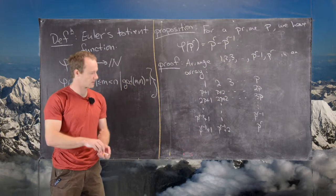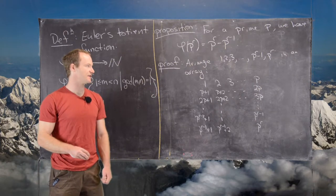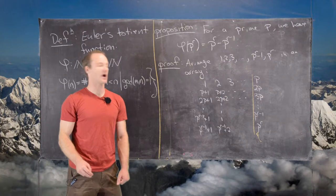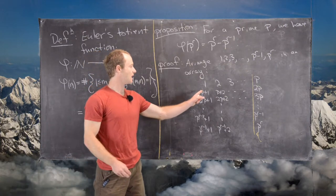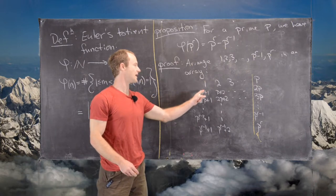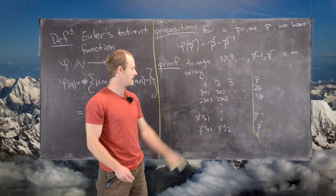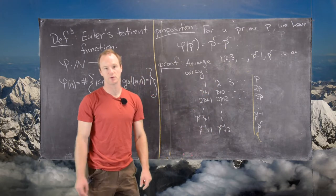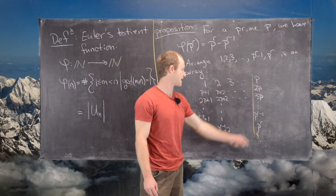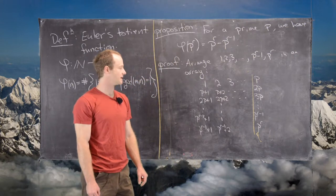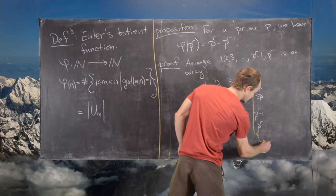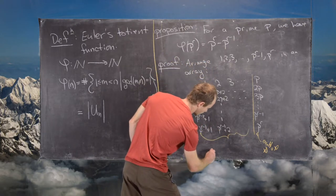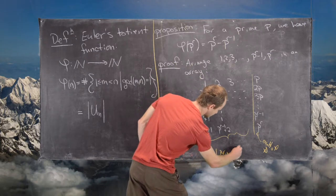Looking at this array, the last column is the only part that is not relatively prime to p. Every entry in the first column has remainder 1 when divided by p, every entry in the second column has remainder 2, and so on — all the way to the second-to-last column, where entries have remainder p−1. The final column contains all multiples of p. Everything outside that last column is relatively prime to p.